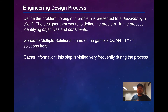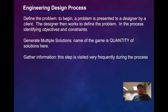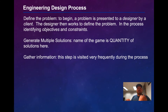The next step to mention is to gather information. This step is visited very frequently throughout the process. Even though I'm listing these steps in order, they do not always happen in this order and are often revisited throughout the design process. In the gathering information step, you're getting information — that could be doing research, literature searches, running experiments in a lab, or a number of other ways to get information about the problem you're trying to solve.